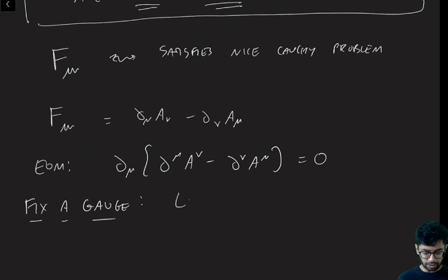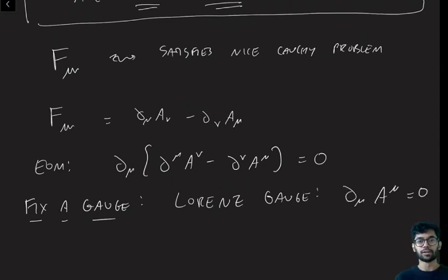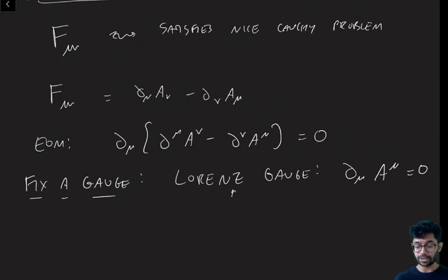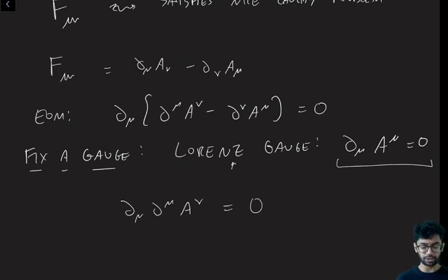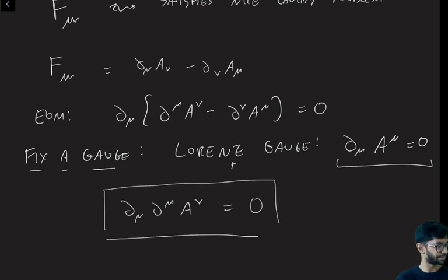So fixing a gauge is imposing an extra constraint on A to remove this ambiguity that we had to shift it by lambda. So one choice is Lorenz gauge. Lorenz gauge is the following constraint on A: d_mu A^mu equals zero. Lorenz gauge happens to be Lorentz invariant. Those are two different people. Lorenz does not have a T in here, which is a poor fact. These are often confused. Lorenz gauge is d_mu A^mu equals zero. If you impose this constraint on A, then the Maxwell equation just becomes d_mu d^mu A_nu equals zero, which is a perfectly good wave equation for all of the components of A. And this propagates all the components of A in time and you can solve this.